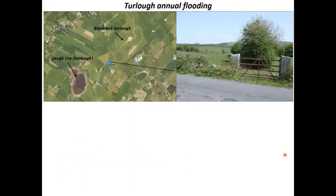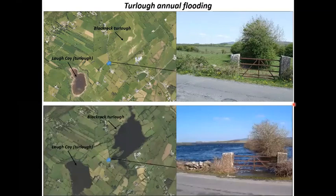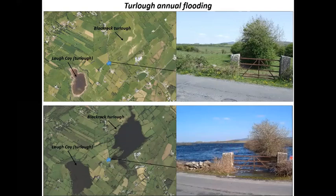Here is aerial photography of two turloughs in the Gort Lowlands catchment: Black Rock and La Coy. In summer, Black Rock is completely dry — you can see one of the main sinks or swallow holes in the turlough. La Coy is quite low, although it usually has a permanent water level at its base all year round. In summer the land is commonage and completely dry. In winter, the aerial photography shows widespread flooding at both locations — all the land visible in the summer image is completely flooded. It can be quite dramatic: in a few days, Black Rock can fill to nearly 12 metres depth in the middle.